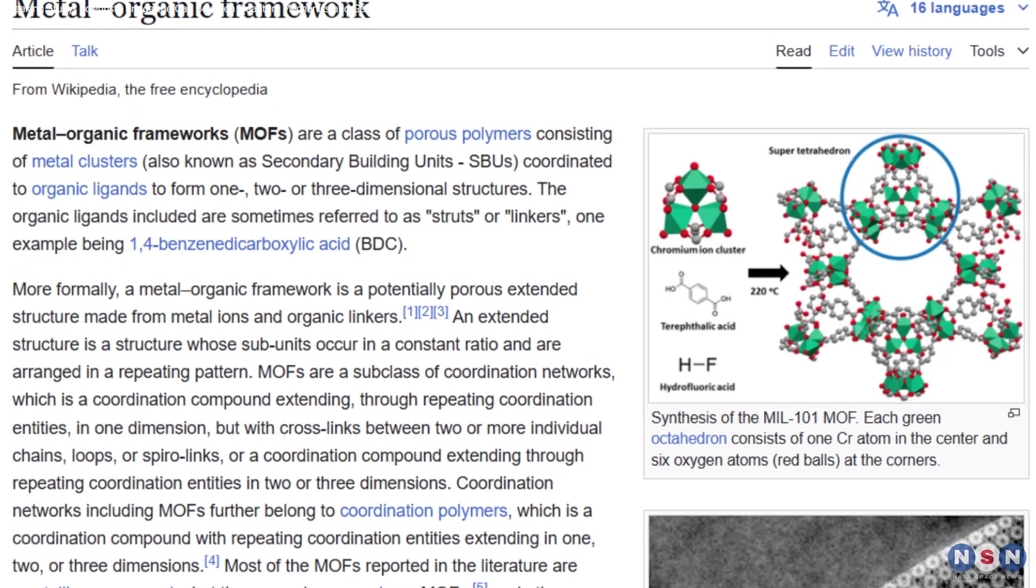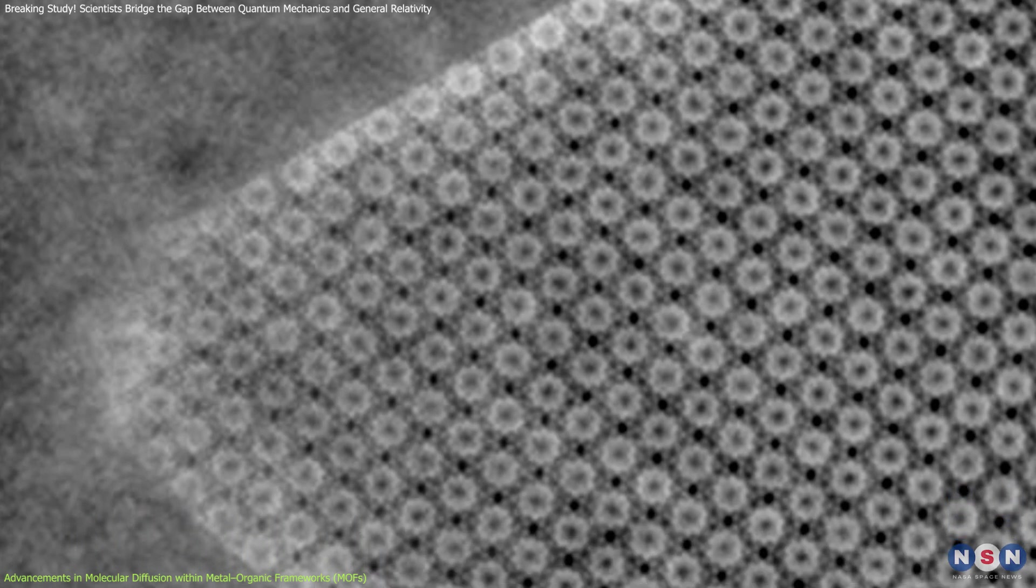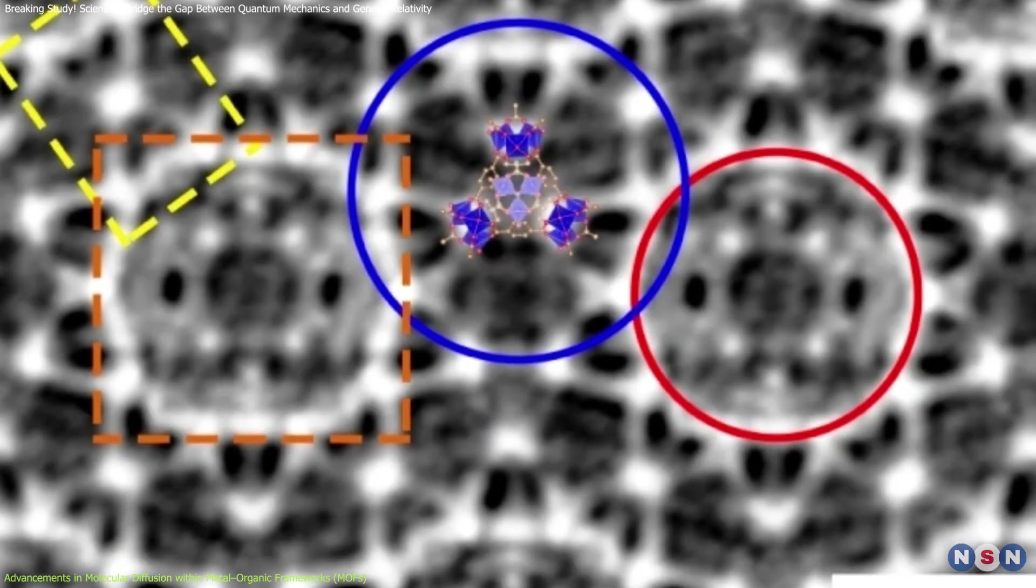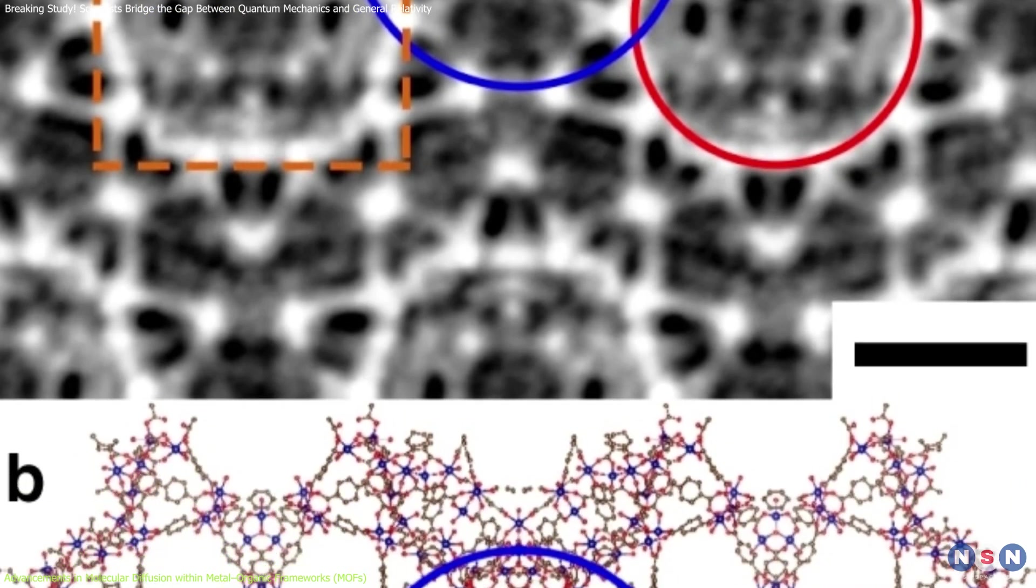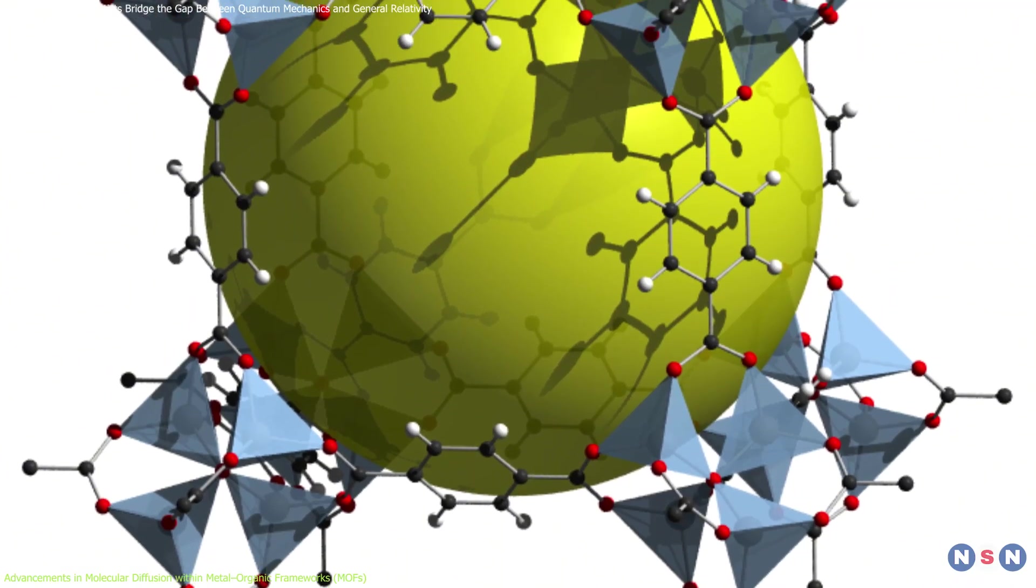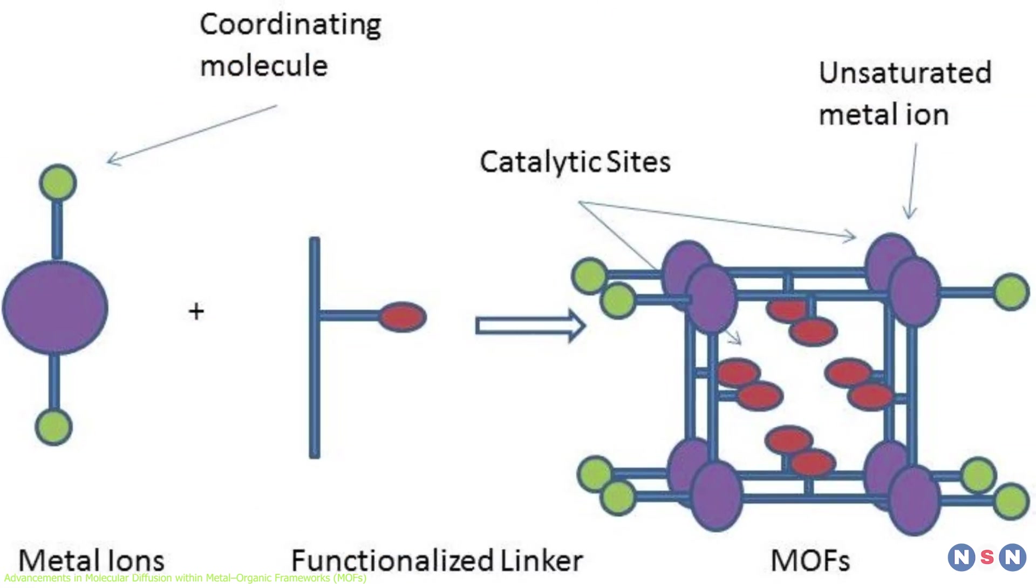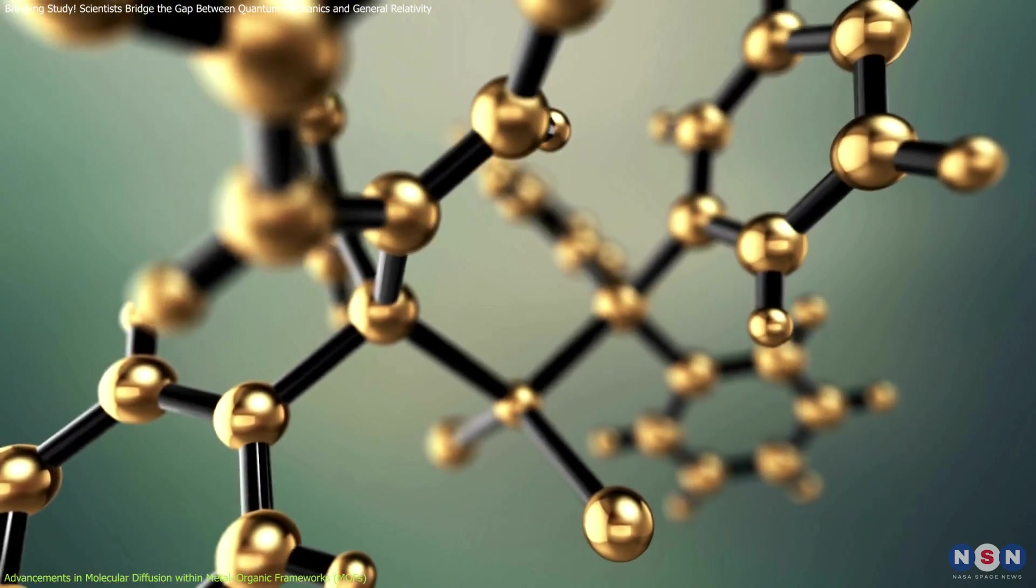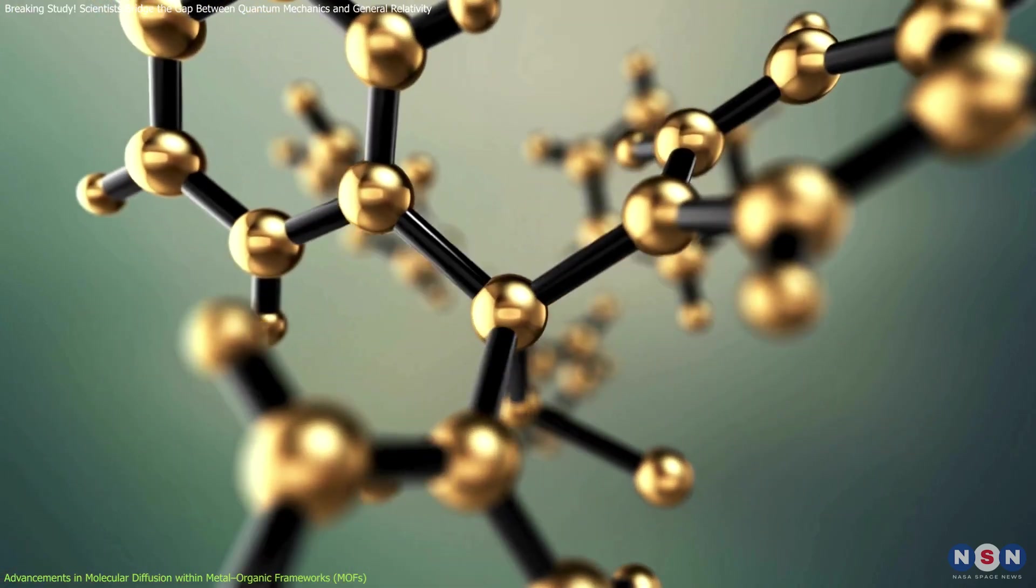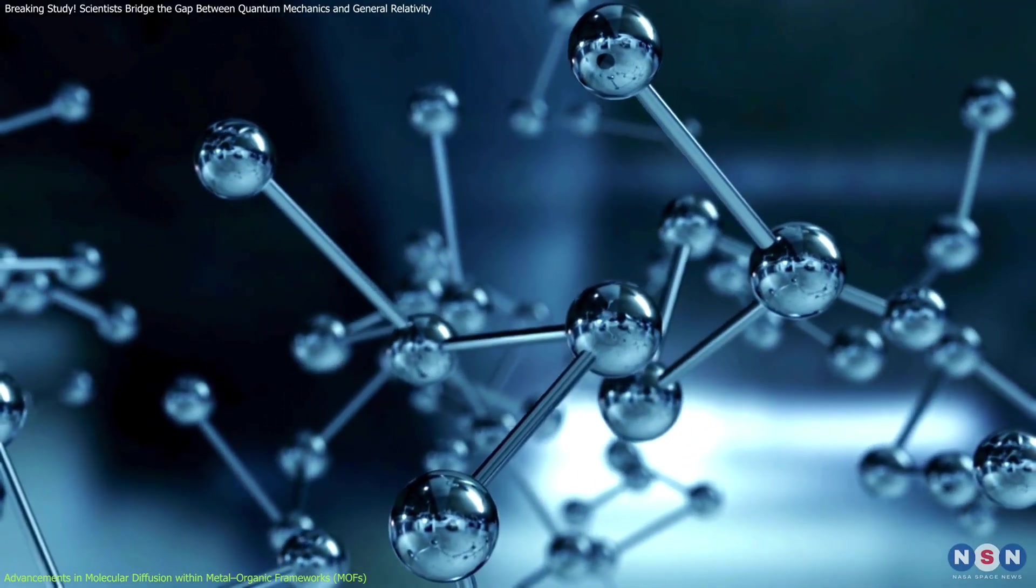Metal-organic frameworks represent one of the most groundbreaking innovations in material science. These structures, composed of metal ions coordinated with organic ligands, form highly porous crystalline networks with immense surface areas and adaptable pore sizes. Such unique properties have established MOFs as essential tools in fields like gas storage, catalysis, and chemical separation. However, achieving precise control over molecular diffusion, or how molecules traverse these porous frameworks, remains a significant scientific challenge.